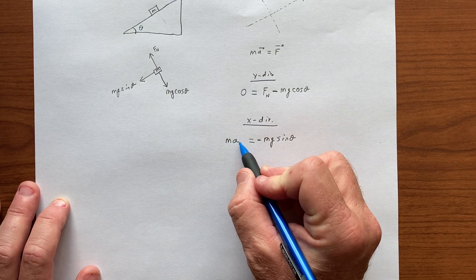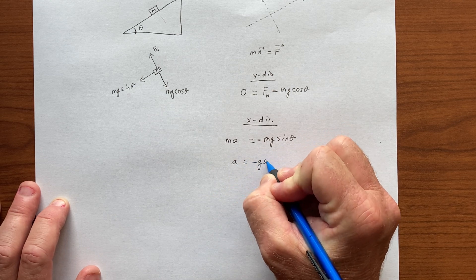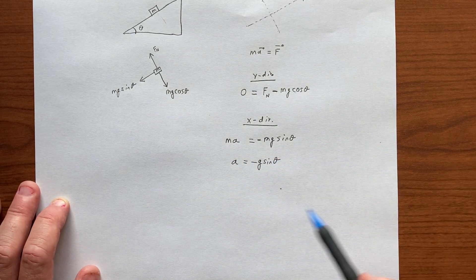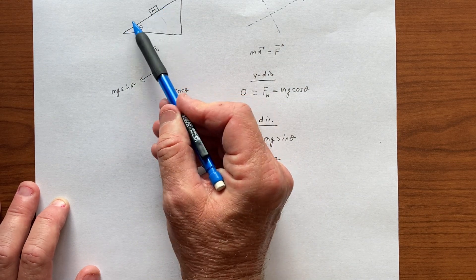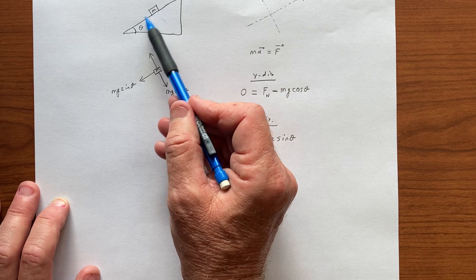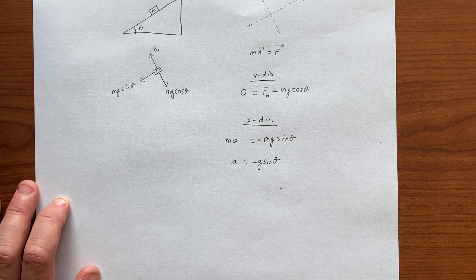So this equation, when we solve it, will tell us that the acceleration is minus g sine theta. And by convention, the tilted left, or left and downwards direction is negative, and that's the direction in which the object will move.